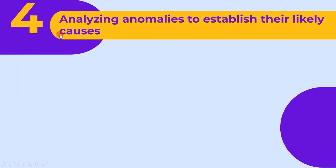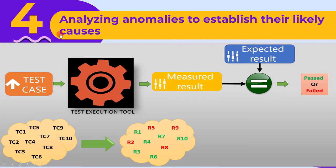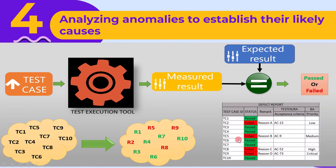The fourth activity is analyzing anomalies to establish their likely causes. During test execution, we run many test cases and as a result we get many results. The obtained results are analyzed and the reason for each failure is recorded. This is what the fourth activity states: analyzing anomalies to establish their likely causes.